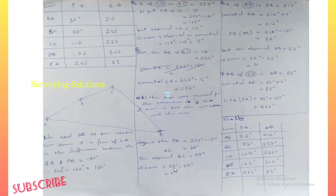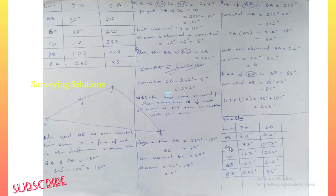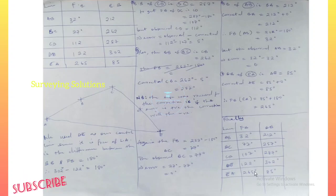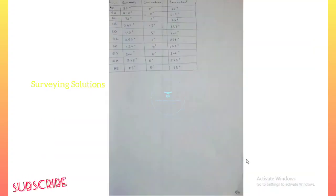The corrections were applied where needed — the 5 degrees at that particular point. Finally, the corrected bearings are: line AB — 32 and 212; line BC — 77 and 257; line CD — 107 and 287; line DE — 122 and 302; line EA — 265 and 85. This first method was a bit longer, so let's look at an alternative, shorter method.